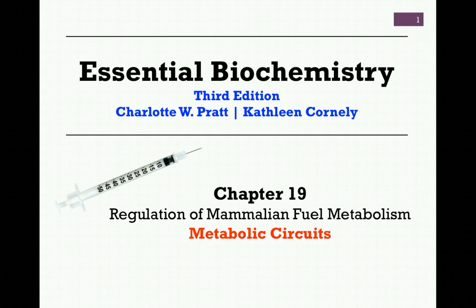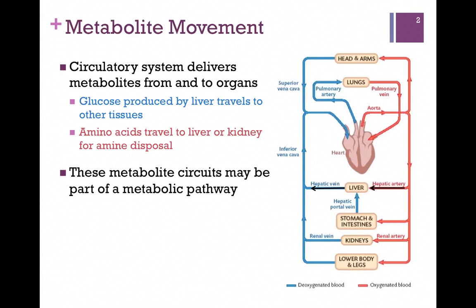In our ongoing studies of Chapter 19, The Regulation of Mammalian Fuel Metabolism, the subject for this lesson is metabolic circuits. Recall from our last lesson that different organs utilize different metabolic pathways under different conditions. Therefore, metabolites are continually being delivered to and from organs, and for this we need a circulatory system.